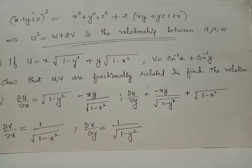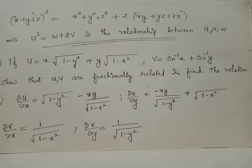Suppose u equals x times root of 1 minus y squared plus y times root of 1 minus x squared, and V equals sine inverse x plus sine inverse y. Let us check whether u and V are functionally related and find the relation between functions u and V.